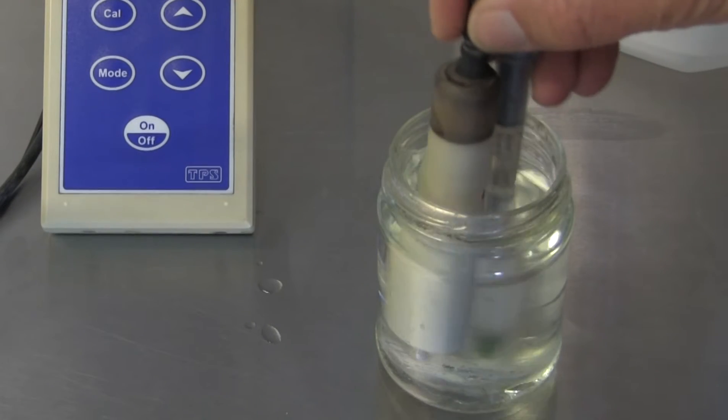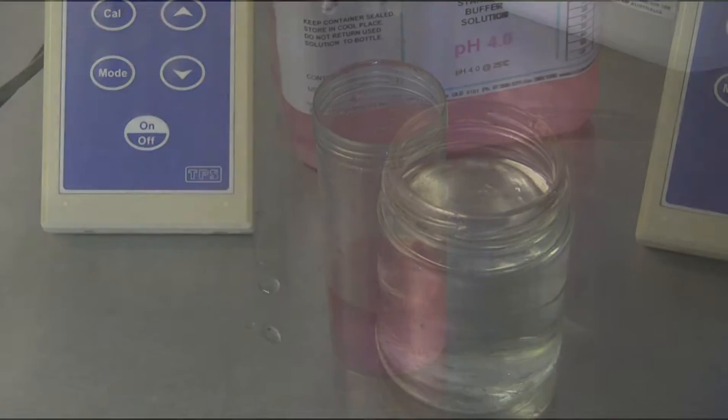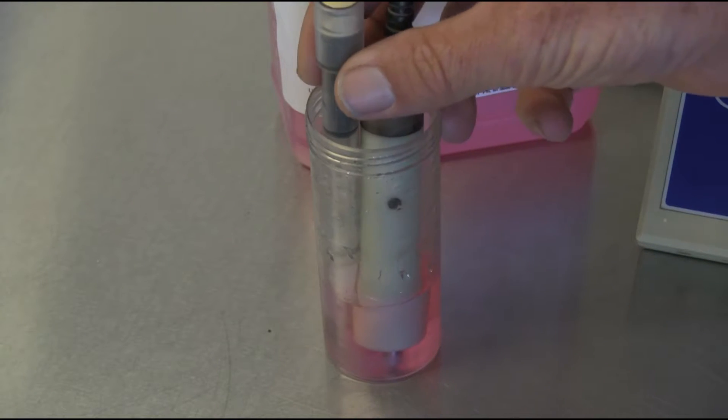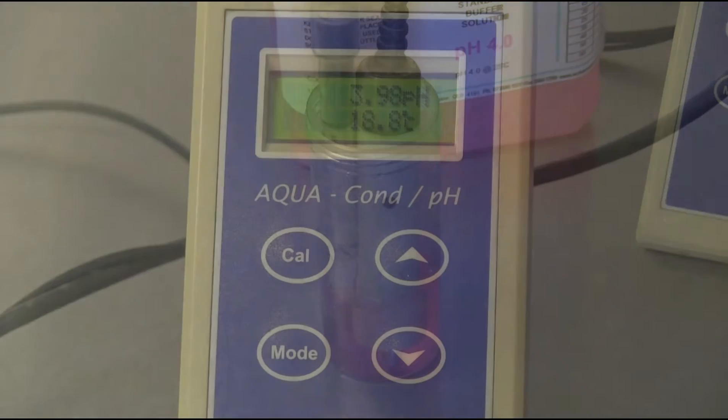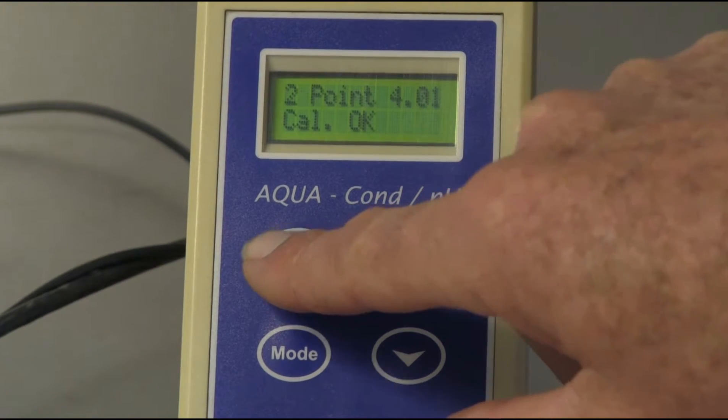Rinse the sensor in distilled water. Remove and very gently shake off any excess water. Immerse the pH sensor in a small sample of pH 4 buffer. Allow the pH reading to stabilize, then calibrate using the same method as the first calibration.